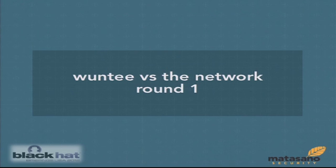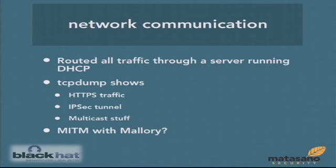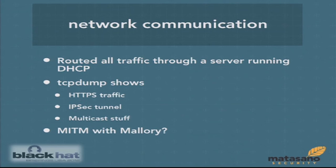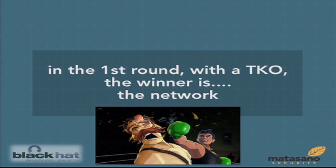The first thing I wanted to look at was network communication. I connected the device to a server with two NICs and monitored traffic. The device has no Wi-Fi, so I physically connected it. Looking at tcpdump, I saw HTTPS traffic, an IP tunnel that was initialized, and some multicast. I tried to man-in-the-middle the HTTPS traffic with Mallory, but it was all mutually authenticated. I couldn't get into the IPsec tunnel either. The network beat me — essentially all traffic was encrypted.